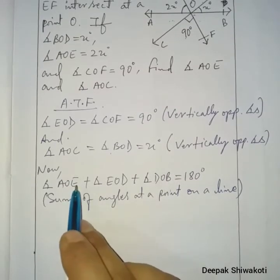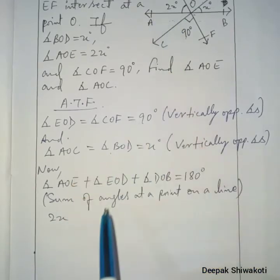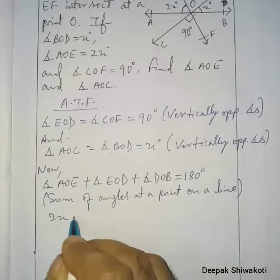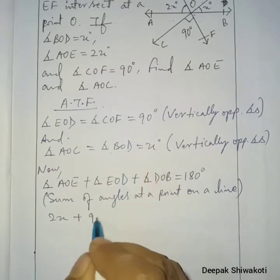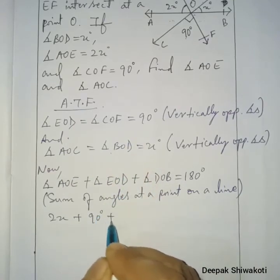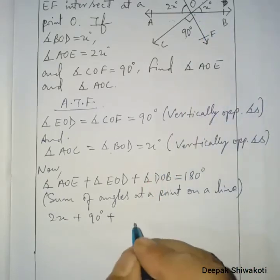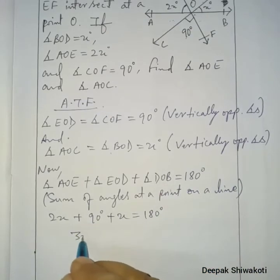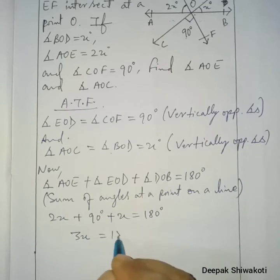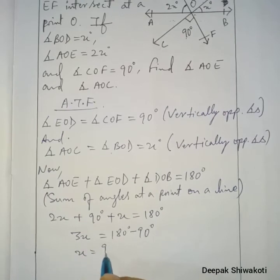Angle AOE is given as 2x, and angle EOD equals 90 degrees, plus angle DOB which is x, equals 180 degrees. So 3x plus 90 equals 180, therefore 3x equals 90, and x equals 90 divided by 3, which equals 30 degrees.